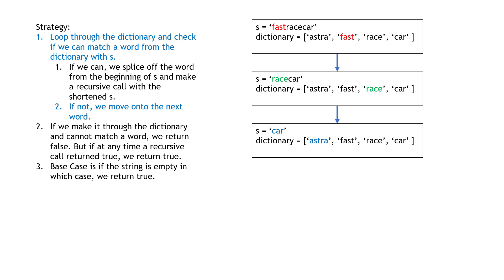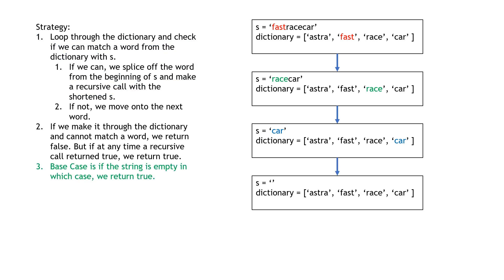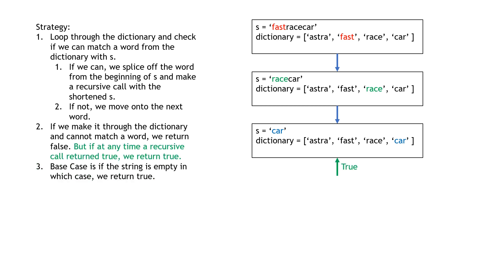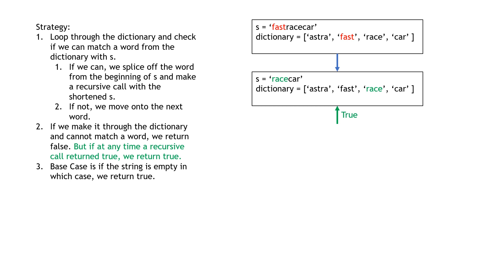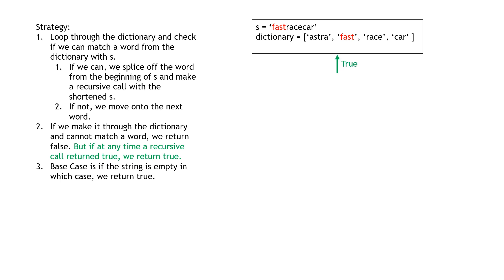We start with the first word — no match. Fast doesn't match. Race doesn't match. However, car matches, so we splice it off and make a recursive call with the empty string. This is the base case, so this recursive call returns true. Now our algorithm sees that a recursive call returned true, so we stop the for loop early and return true. This propagates back up the stack, and our overall answer is true.